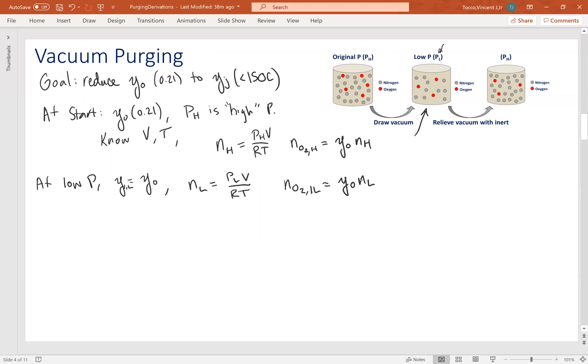Now in the second step, we're replenishing the stuff that we lost with fresh, pure, inert. So pressure is now back to its normal level. So at high pressure, this is step two, we can say that we don't know what the oxygen concentration is, but we can say that Y1, so this is the oxygen concentration after one cycle, is equal to the number of moles of O2 divided by the total moles. Because pressure is back to its regular level, P is equal to pH now, we now know that the number of total moles is equal to N sub H. And we've already calculated that in step one above. Now we just need to know what the number of moles of O2 are.